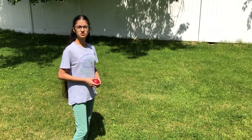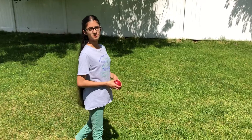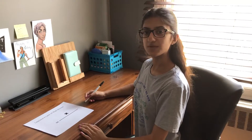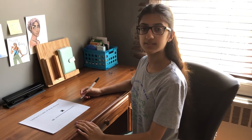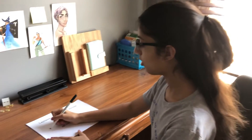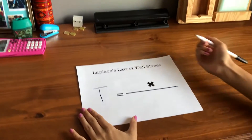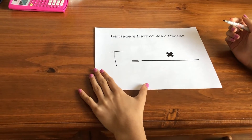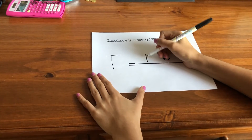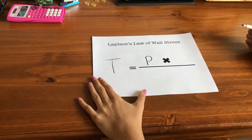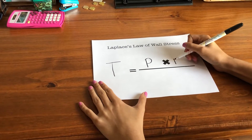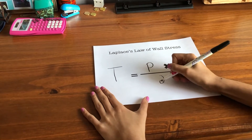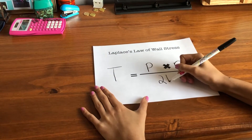You might be wondering what balloon thickness had to do with the ability to win the game. This is where Laplace's Law becomes significant. Laplace's Law of Wall Stress states that the wall stress T on the wall of a fluid-filled sphere or cylinder, such as a water balloon, is directly proportional to the pressure P of the fluid within the sphere and the radius R of the sphere, and is inversely proportional to the wall thickness H.